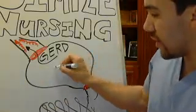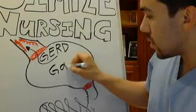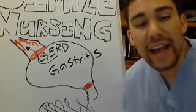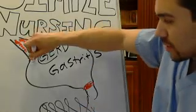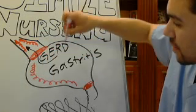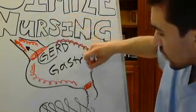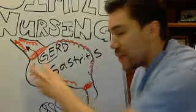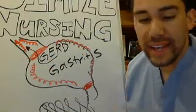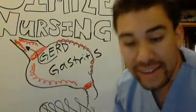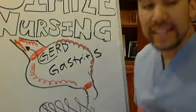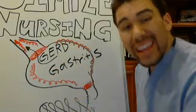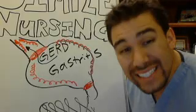Gastritis, on the other hand, is really an entire inflammation of the lining of your stomach itself. With GERD, we're talking only about the lining of the esophagus. With gastritis, we're talking about the mucous membrane of your entire stomach being eroded — all that acid is eroding it, and you have a lot of pain from too much acid production.